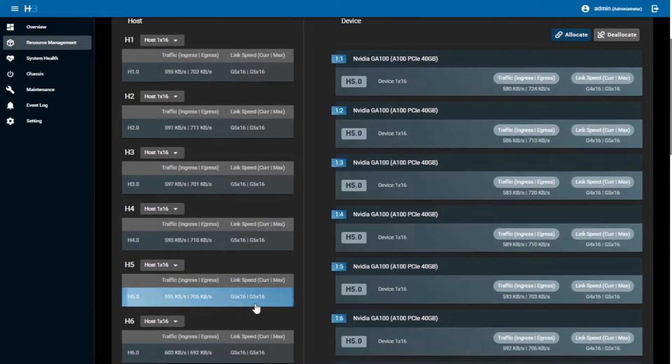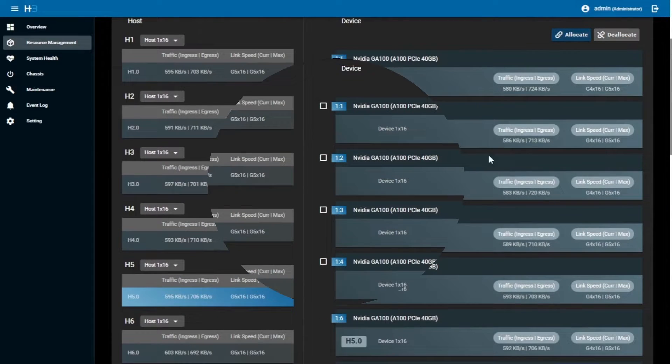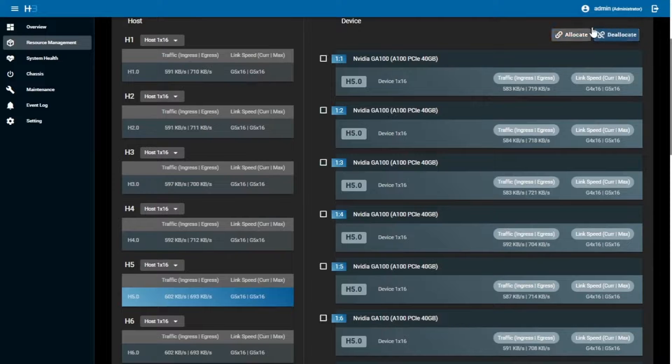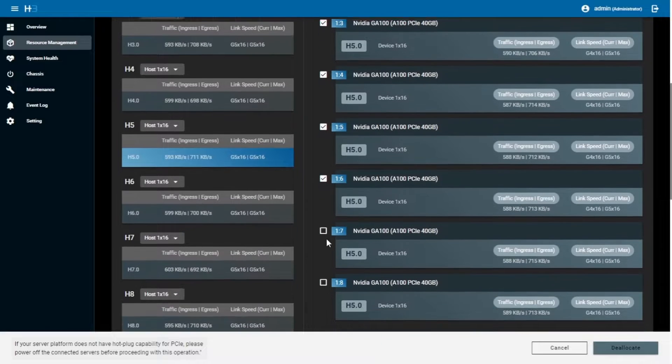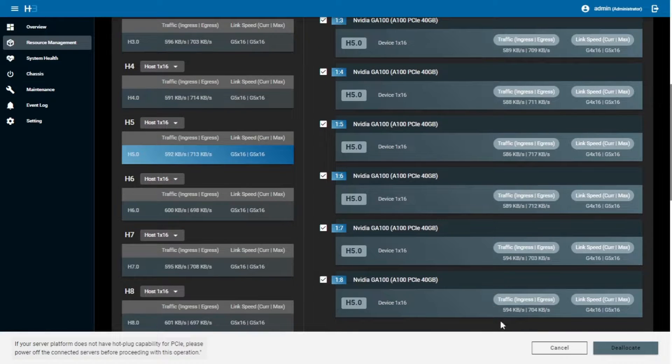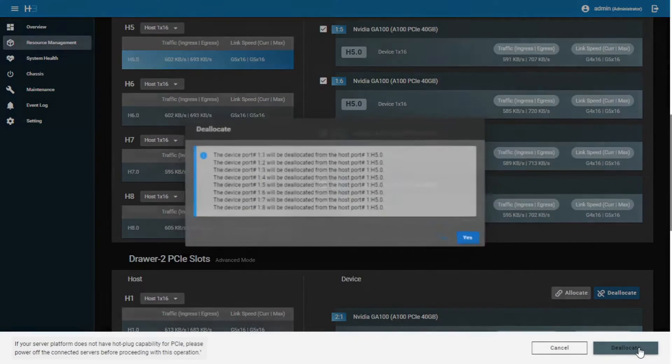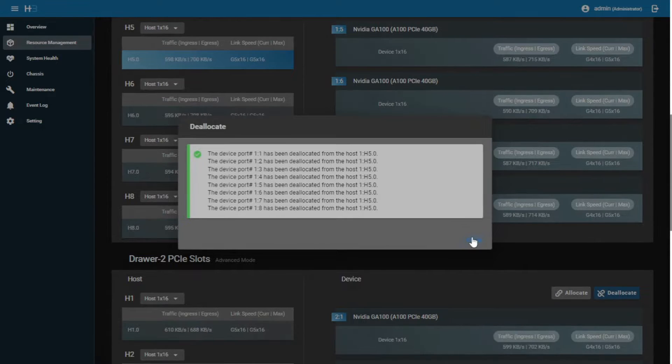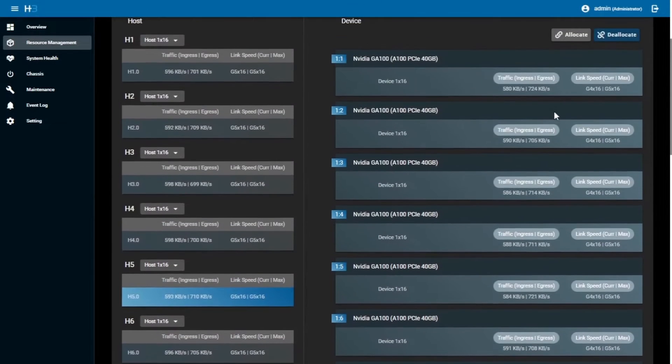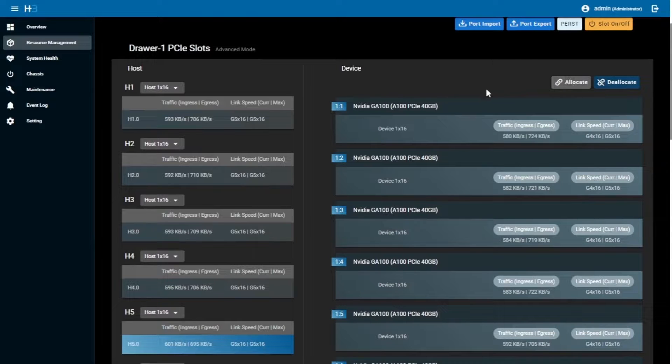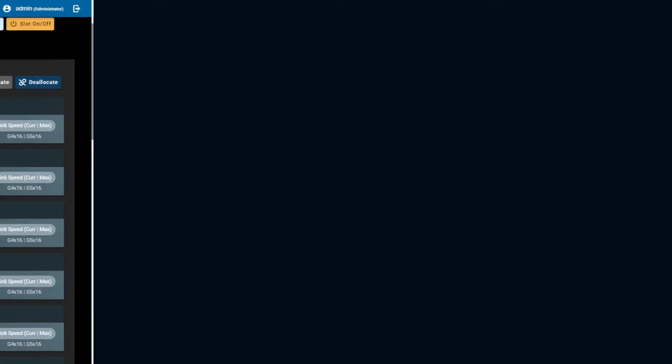Every device is connected to host 5. Then when it turns to deallocate in the same way, select host 5. Then hit the deallocate tab to disconnect all the eight GPUs. This is how to use our Falcon system to configure all these device resources to serve us for different tasks.